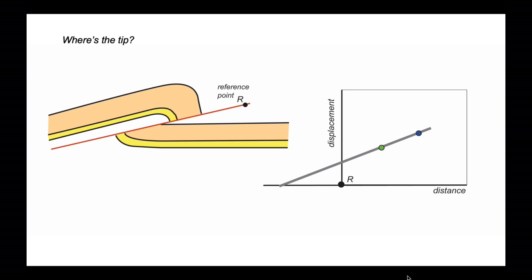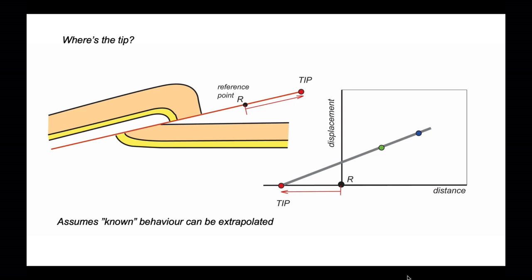We just follow our extrapolation across the graph to the place where displacement is zero — there. That tells us that the tip lies that distance beyond the reference point. This is a pretty neat way of completing cross-sections. It does assume, however, that there's a known behaviour between displacement and distance, and that this can be extrapolated beyond our known relationships to where the displacement dies out to nothing.